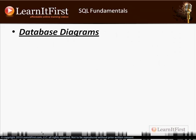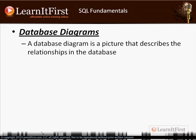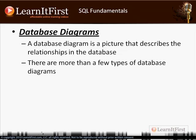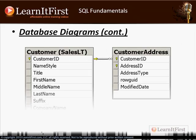Let's talk about database diagrams first. A database diagram is either a picture or a document that contains visual elements describing the relationships and metadata of a database. There are a lot of different types, but the one I'm going to cover is what you can do inside of Management Studio — that will be one of our exercises. Here's an example of one you can create within Management Studio. You can see the two tables and their relationship; this right here denotes a foreign key.